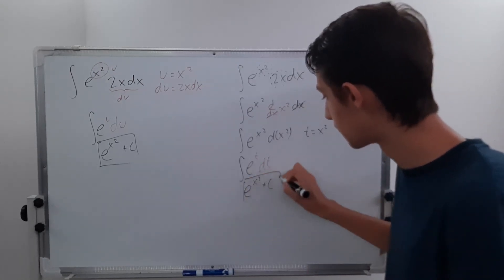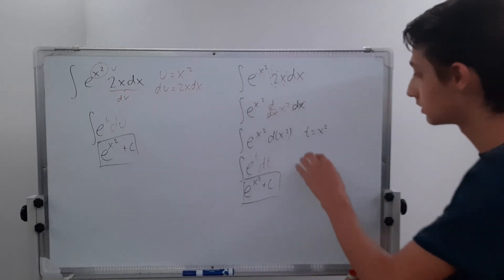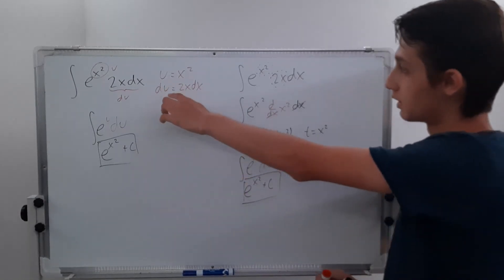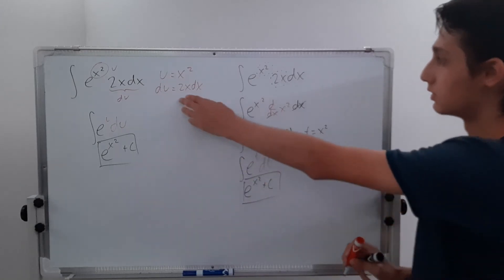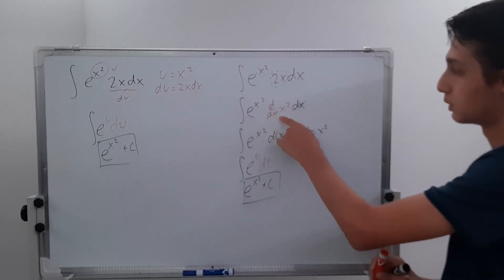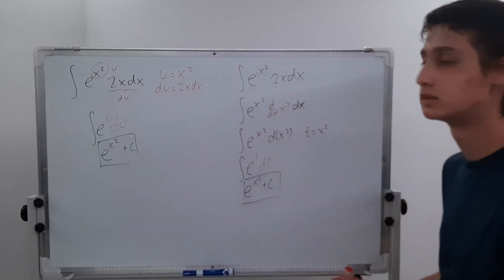And that is the premise of u substitution. This little t here, that's basically what we did up here. But we didn't need to find our du because that's basically what we found in this step. That's why u substitution works.